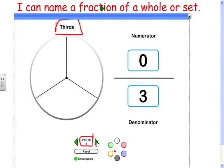Here we have three total parts, so the fraction shaded is two-thirds. Two out of three, two-thirds.